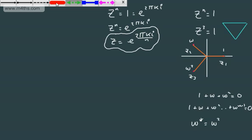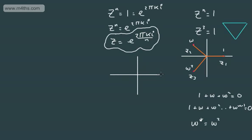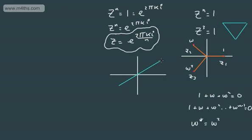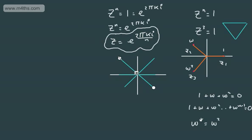Sketching the six roots of unity on an Argand diagram, we'll have six points all with length 1, equally spaced around a unit circle of 2π radians. We label them as 1, ω, ω², ω³, ω⁴, and ω⁵ — each equally spread around the circle.